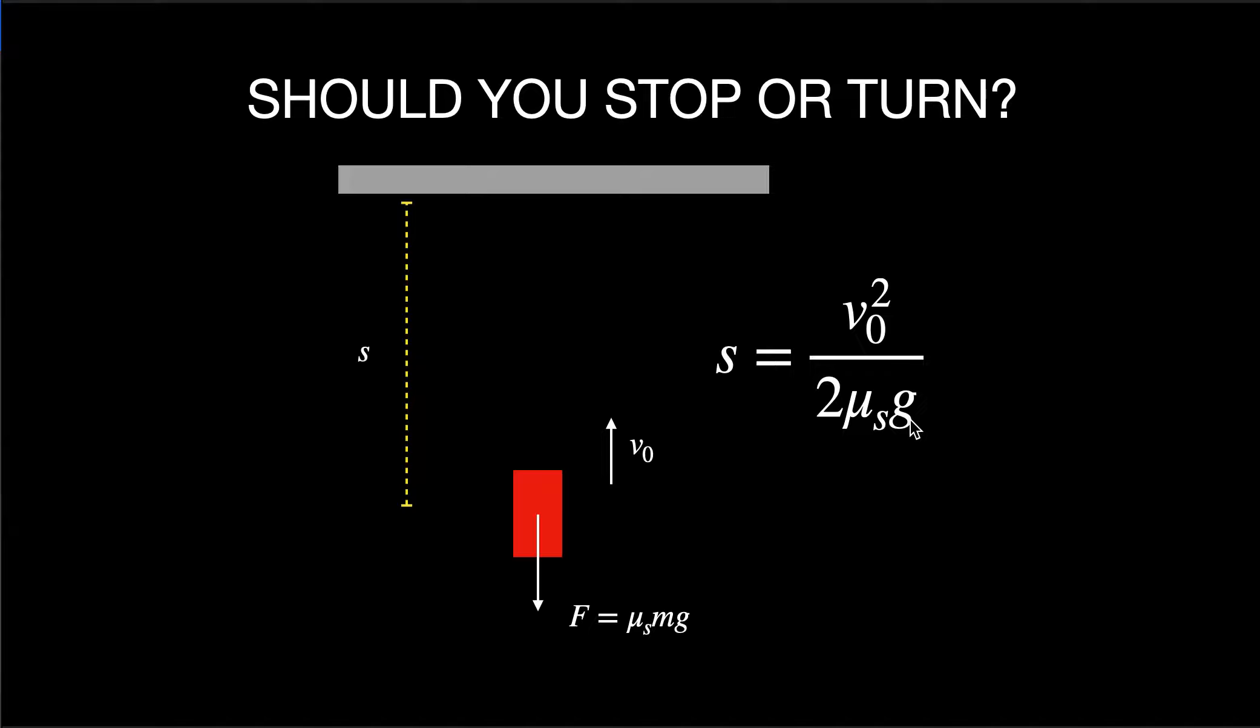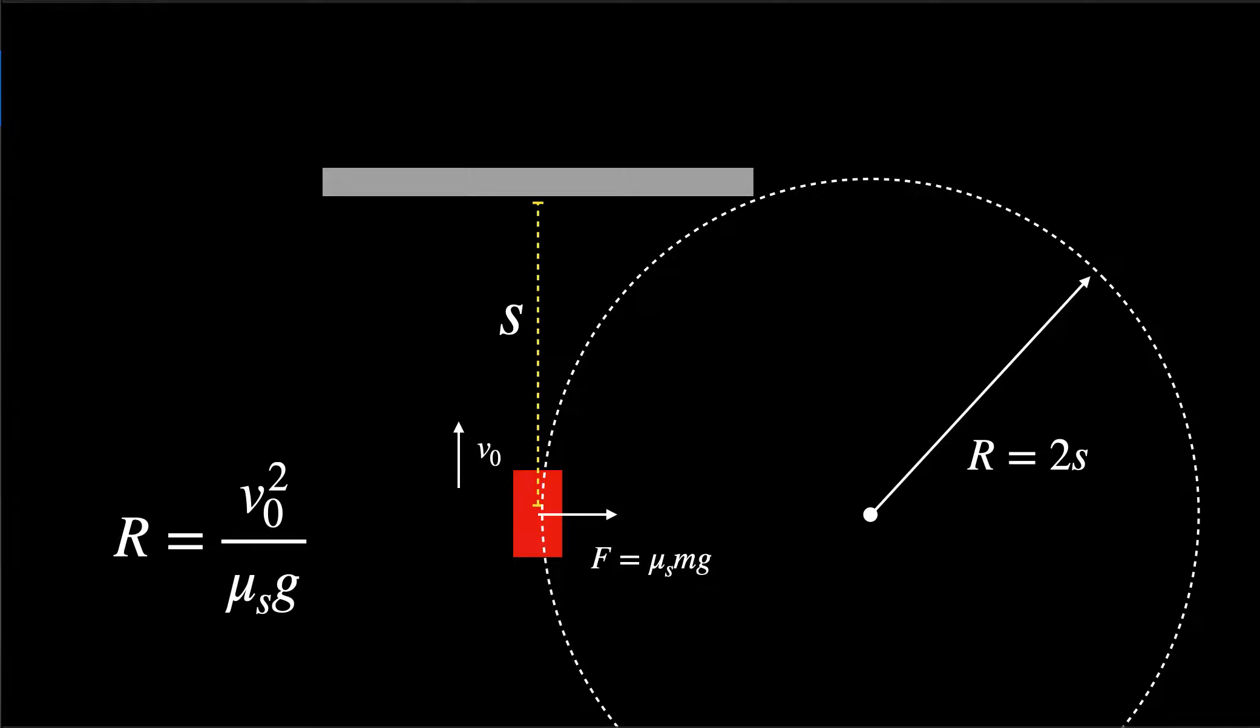Now what if you want to turn? If you want to turn, then the frictional force is to the side, and that would cause a centripetal acceleration. You can calculate the radius of turning in that case and you get this similar expression: R = v₀²/(μg), initial velocity squared divided by mu times g. It takes twice the radius to turn, so it'd be better to stop.